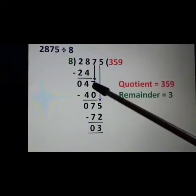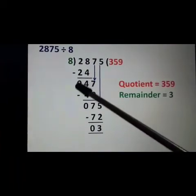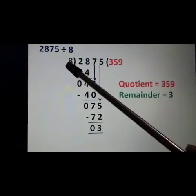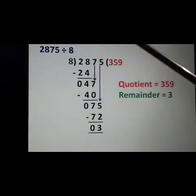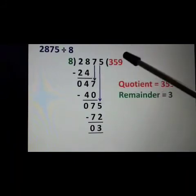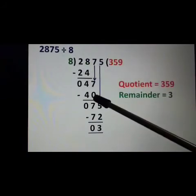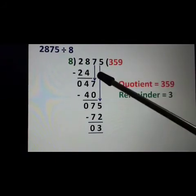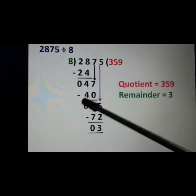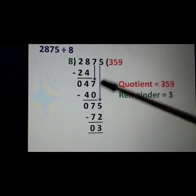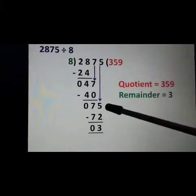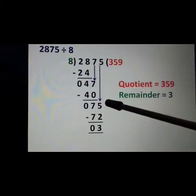Now we will copy down the next digit 7. Our dividend is 47. Say the table of 8: 8 fives are 40, because 8 sixes are 48 which is greater than 47. So we will take the 5th step: 8 fives are 40. Subtract 40 from 47: 7 minus 0 is equal to 7, 4 minus 4 is equal to 0. Copy down the next number 5. Our new dividend is 75.